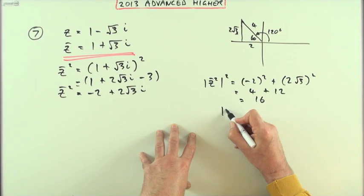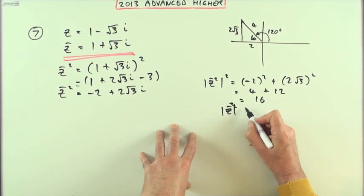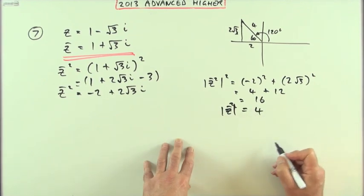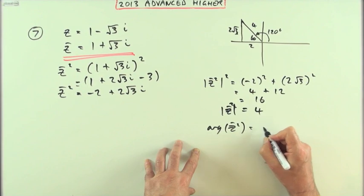That's four plus four threes are twelve, which is sixteen, which means that |z̄²| is four.